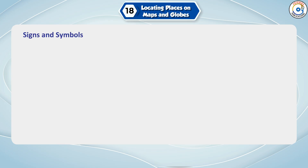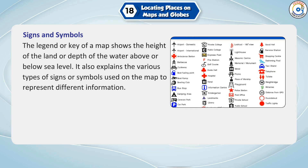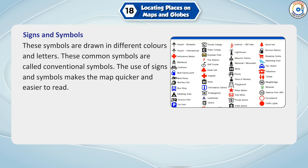Signs and Symbols: The legend or key of a map shows the height of the land or depth of the water above or below sea level. It also explains the various types of signs or symbols used on the map to represent different information. These symbols are drawn in different colors and letters and are called conventional symbols. The use of signs and symbols makes the map quicker and easier to read.